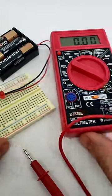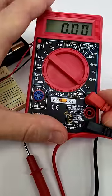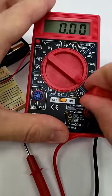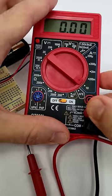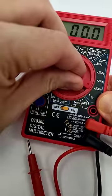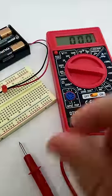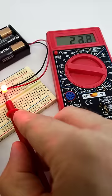In this case, the current is very small. That means I can safely move down to one of the lower current settings without worrying about blowing the fuse. So I'm going to go down to 200 milliamps, check the current again, and then I can get a more accurate reading.